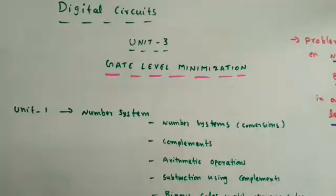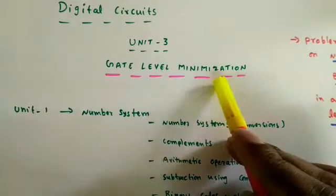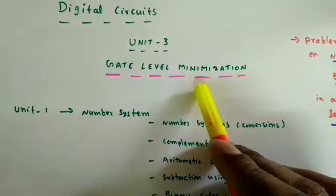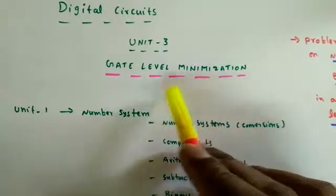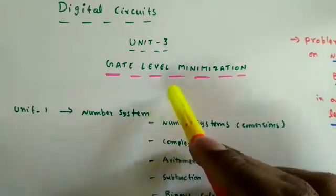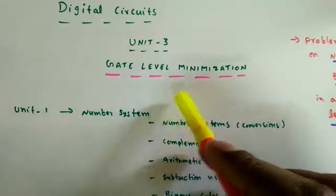In this lecture, I'm going to start the new unit on gate level minimization. We're going to discuss K-maps — two variable, three variable, four variable, as well as five variable K-maps.